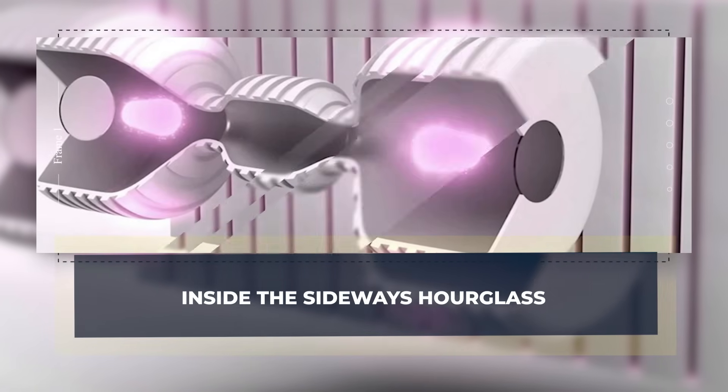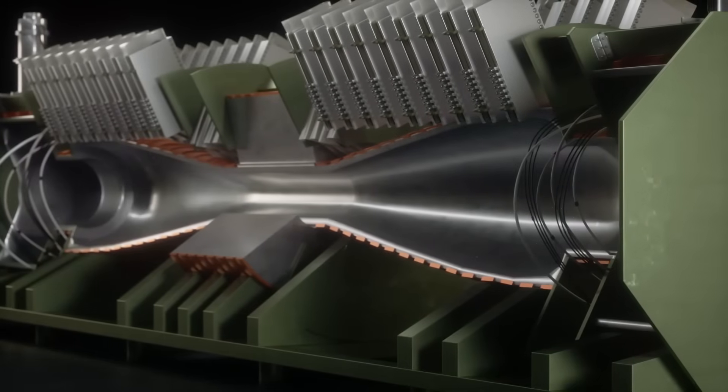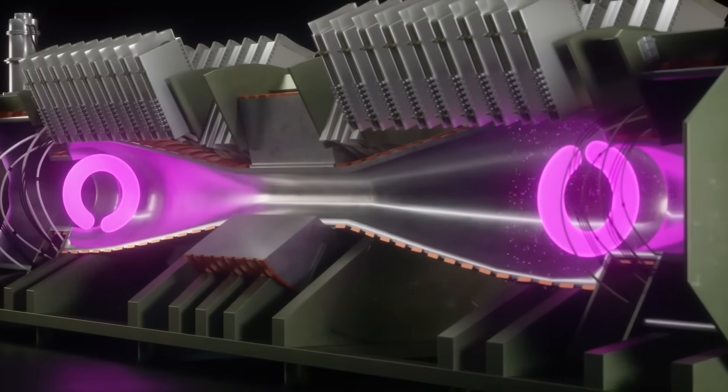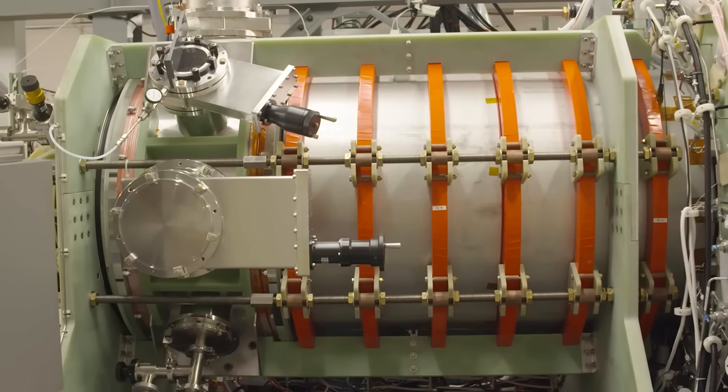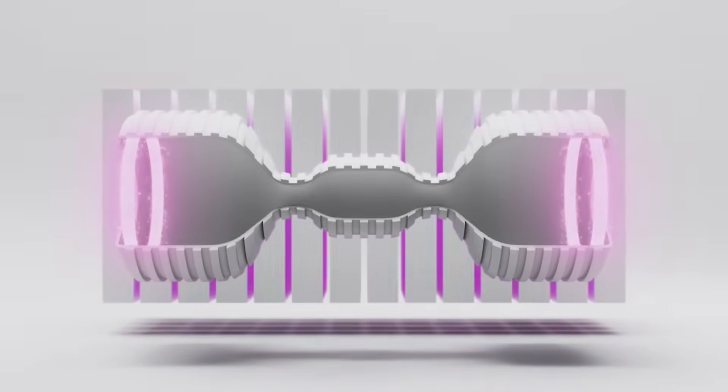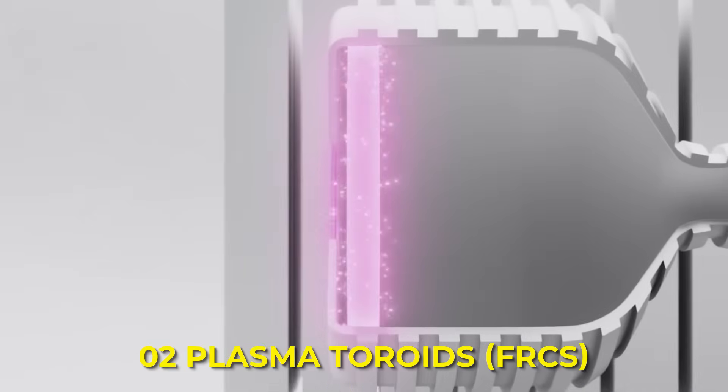Inside the sideways hourglass. Helion's reactor looks like an hourglass lying on its side. In the wide ends, the formation sections, the machine creates two plasma toroids called FRCs, short for field-reversed configurations.